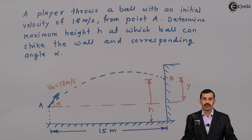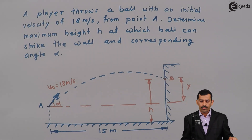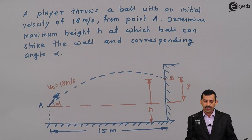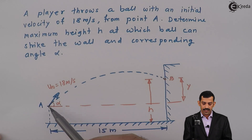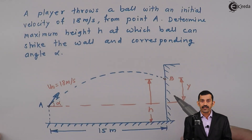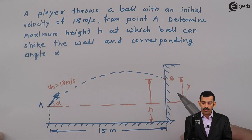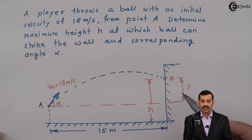Hi friends, we will solve a problem on projectile motion. A player throws a ball with an initial velocity of 18 meters per second from point A. We need to determine the maximum height h at which the ball can strike the wall, at point B where it strikes the wall, and the corresponding angle alpha.